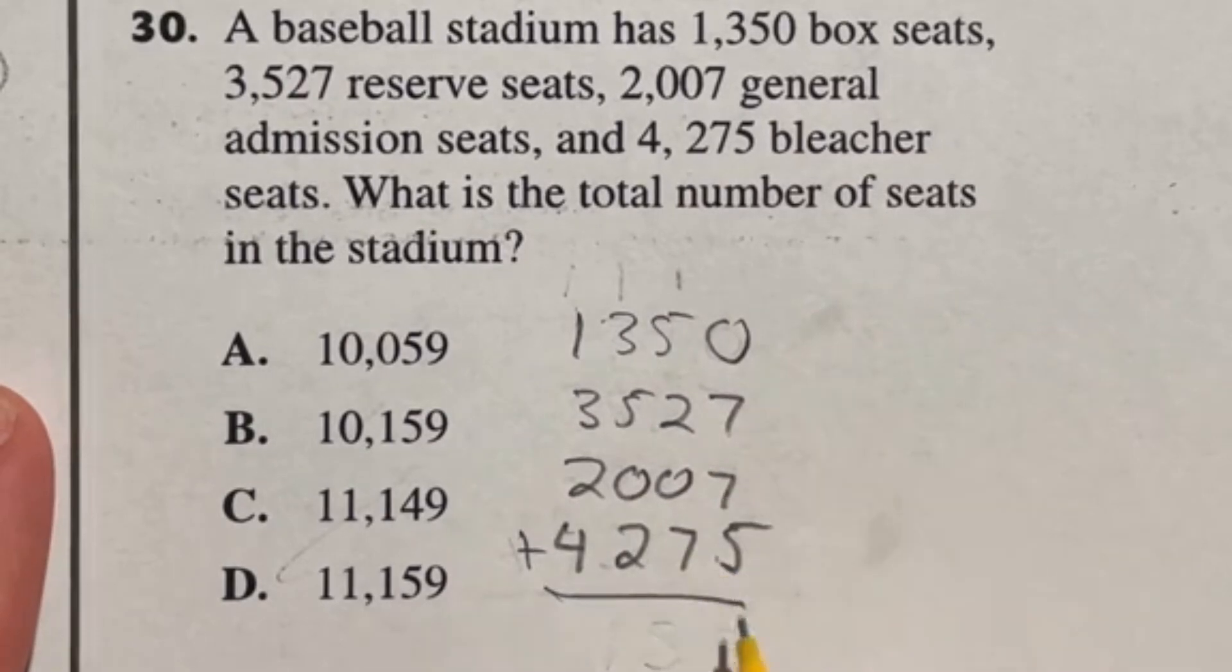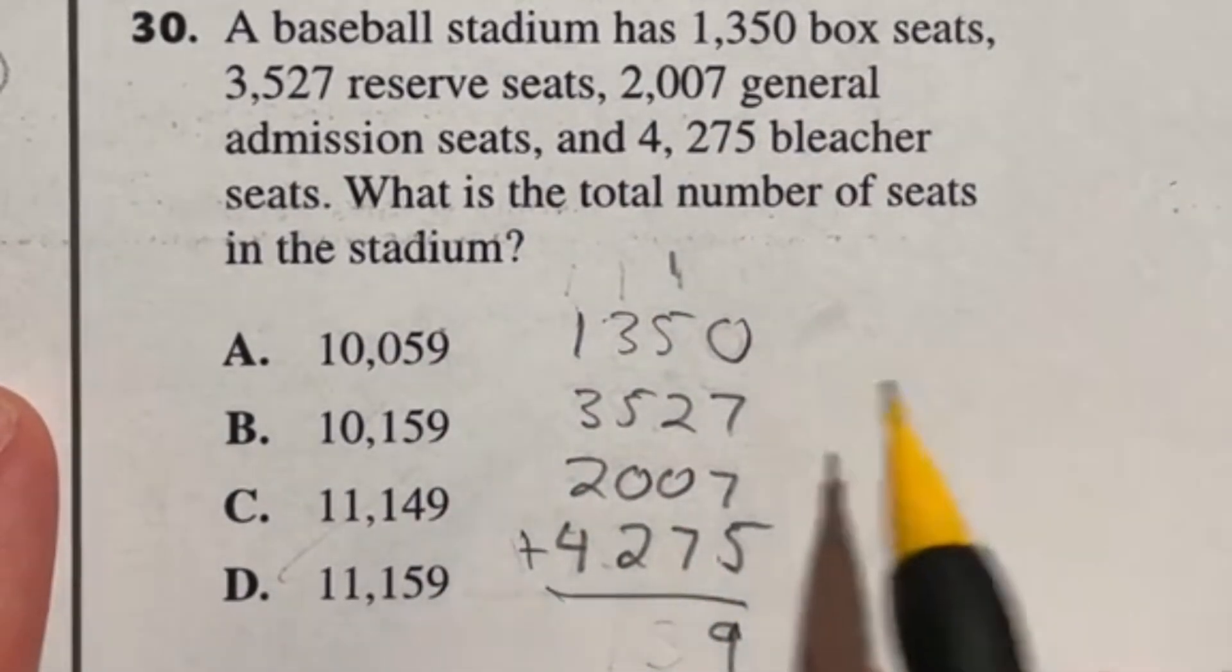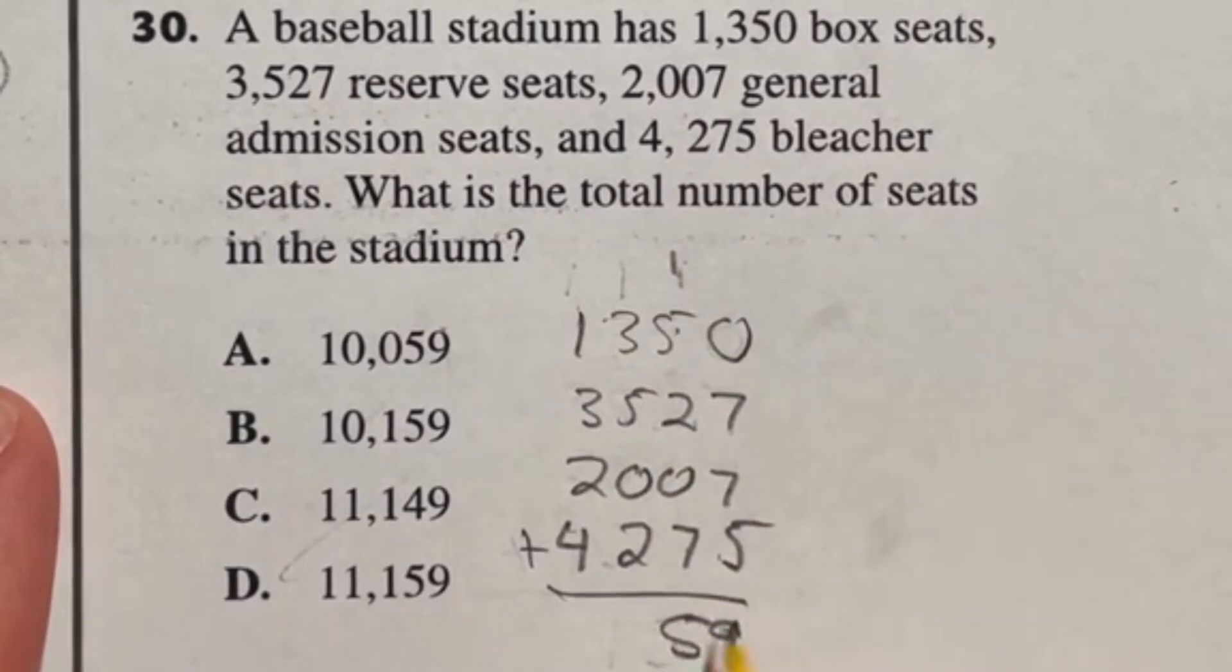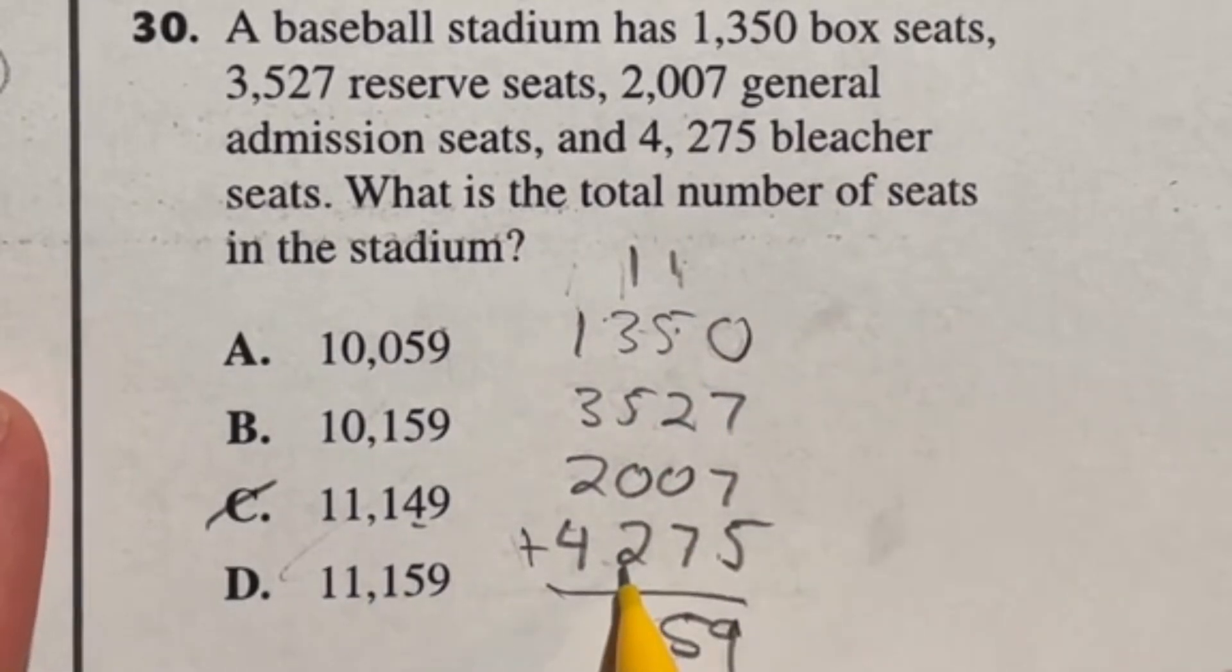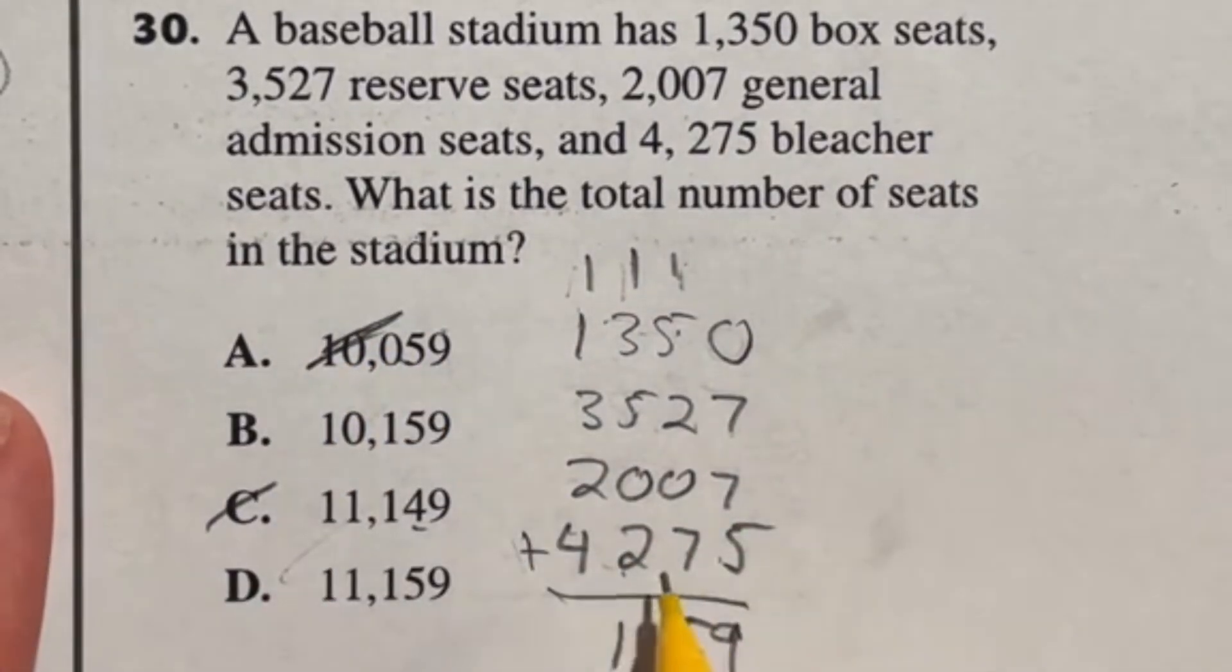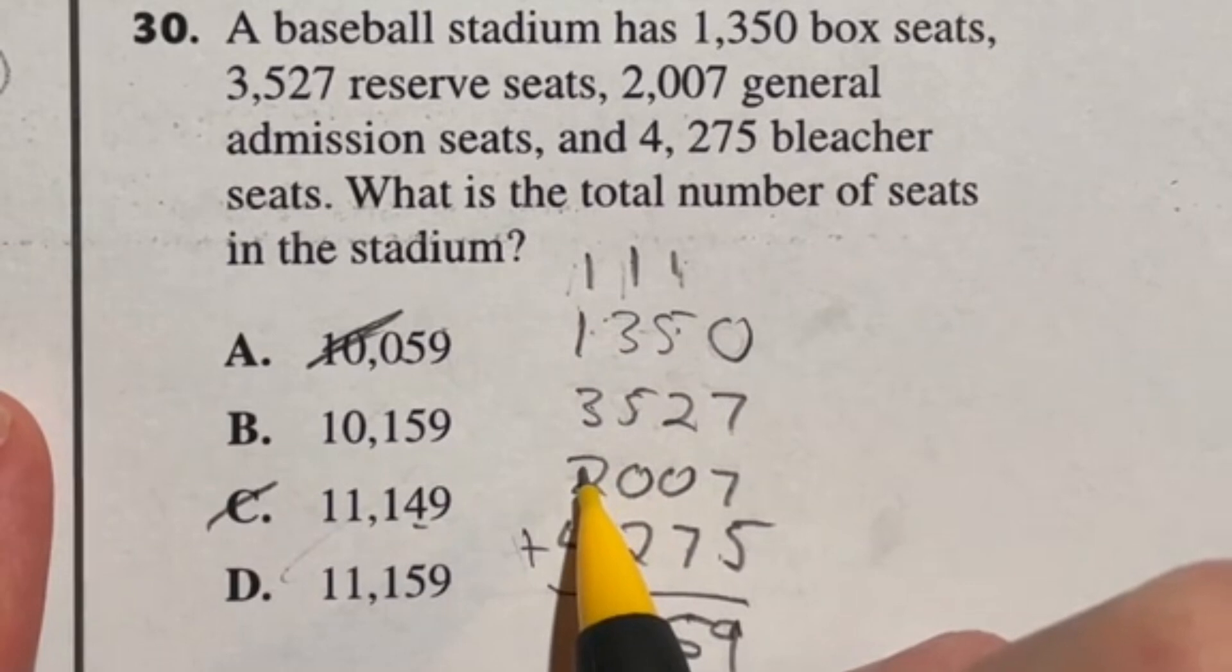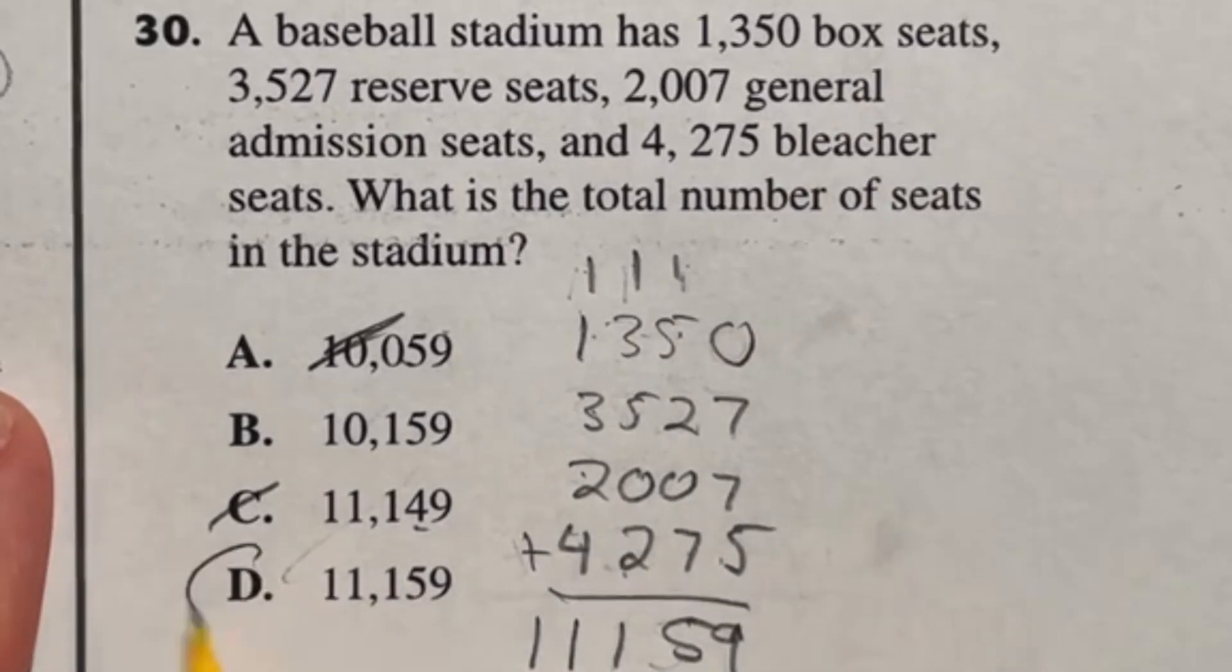7 plus 7 is 14, plus another 5 is 19, carry the 1. Notice all of these have 9 so nothing's been eliminated yet. Next we have 7, 2, and 1 gives us 10, plus another 5 gives us 15, carry the 1. That eliminates C because that has a 4 in that place. We have 5, 3, and 2 which adds up to 10, plus that one more gives us 11, carry the 1. Now we're eliminating A because that had the 0 there. 4 and 1 gives us 5, 3 and 2 gives us 5 for another 10, plus that one we carried gives us 11. Our final answer is D.